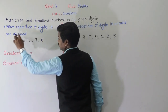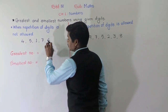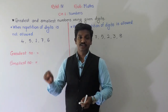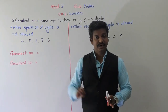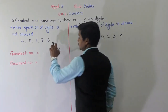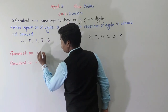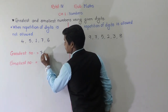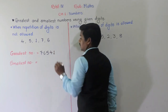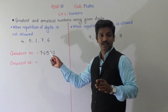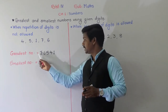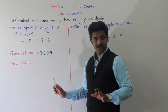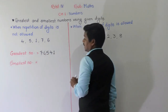To form the greatest number when repetition is not allowed, arrange the given digits in descending order — biggest to smallest. The biggest digit here is 7, then 6, then 5, 4, and 1. So arranging them in descending order gives us 7, 6, 5, 4, 1. That forms the greatest five-digit number: 76,541.